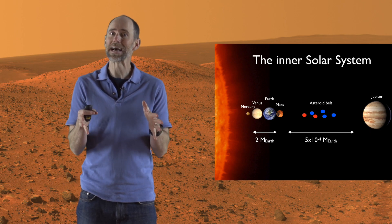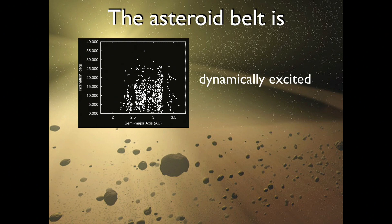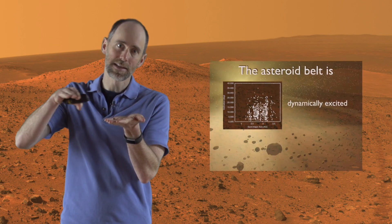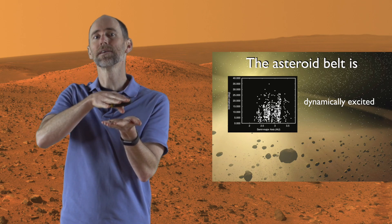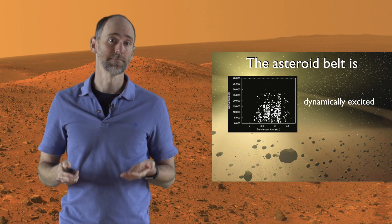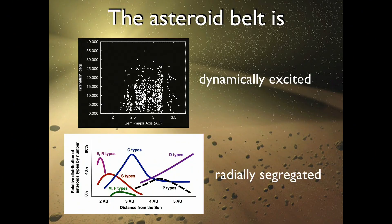There's still some important information within the asteroid belt. The asteroid belt's orbits are dynamically excited — their orbital shapes are not all perfect circles, and their orbits are not all exactly in the same plane as the orbits of the other planets. This plot shows the distribution of the angle between the plane of the orbits of asteroids and of the Earth. In addition, the asteroid belt is radially segregated: the inner parts are dominated by S-type asteroids that are pretty dry, and the outer parts are dominated by C-types that have some water in them. So any model to explain the origin of the solar system needs to explain the asteroid belt as well.